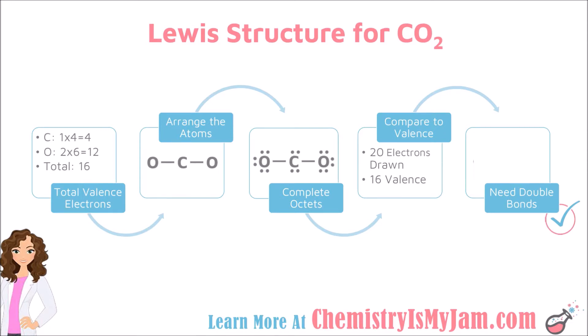Next, you want to compare what you have drawn to your original number of valence electrons. Keep in mind that bonds count as 2 electrons. These are covalent bonds — a covalent bond is a pair of shared electrons. Counting what I have drawn gives me 20 electrons, but I should only have 16. I have too many electrons in my Lewis structure.